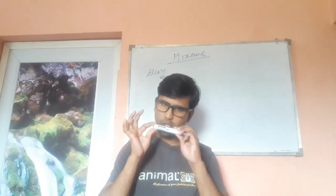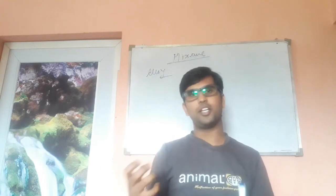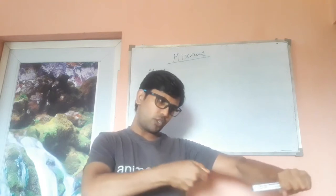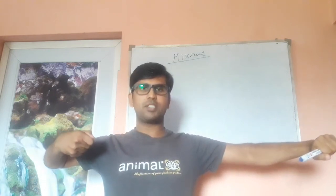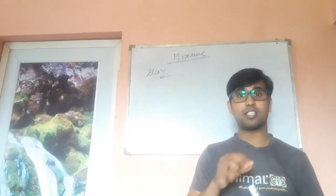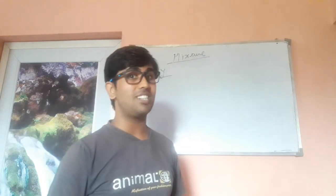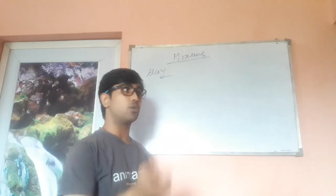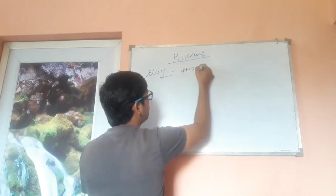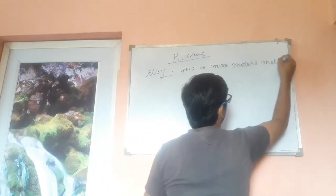Gold smiths, for example, melt silver and gold together to harden the gold, because pure gold is actually very soft — you can dent it with your teeth, stretch it into a thin wire. You can't make jewelry with that soft gold, so you add some silver to make it hard. When you melt two different metals together like that, it is called an alloy.